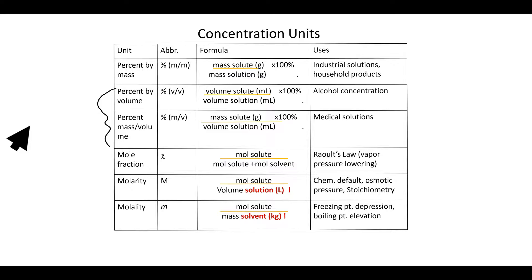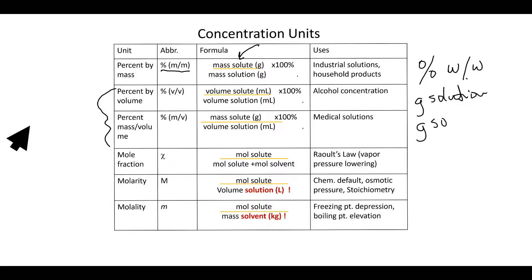First, we'll start with percent by mass, frequently abbreviated as percent m/m or percent w/w where 'w' stands for weight. It is simply the grams of solute over the grams of solution. The grams of solution are the grams of solute plus the grams of solvent added together.